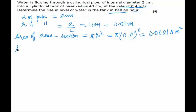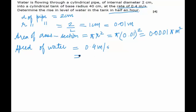Now the speed of water, or the rate of flow, is given as 0.4 meters per second. That means in 1 second it covers 0.4 meters. We will first find out how much it flows in a minute, which would be 0.4 into 60 seconds, equal to 24 meters per minute.